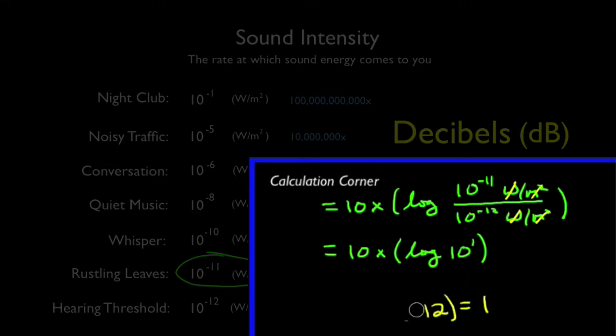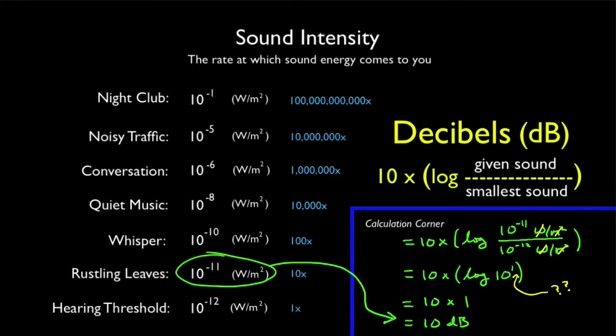What's the log of 10 to the 1? Logs are actually quite simple. With a log, you're merely asking to what power is 10 raised? Do you see here that 10 to the first is 10 raised to the 1? So, to what power is 10 raised? The answer is 1. The log of 10 to the 1 is 1. Take 10 times that, and you have 10 decibels. The intensity of rustling leaves is about 10 decibels.